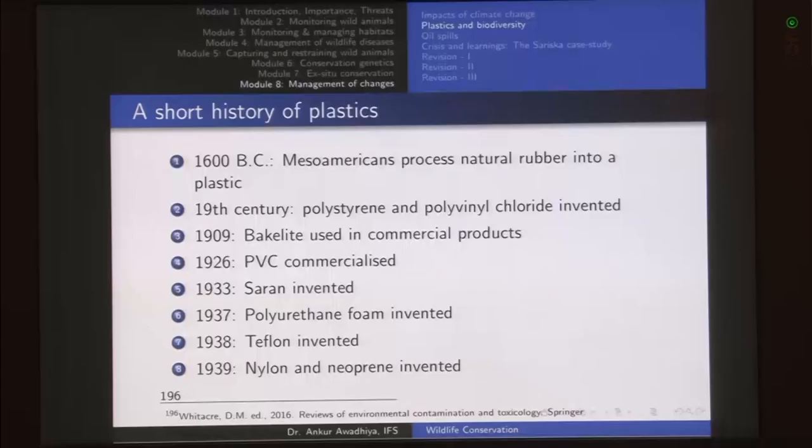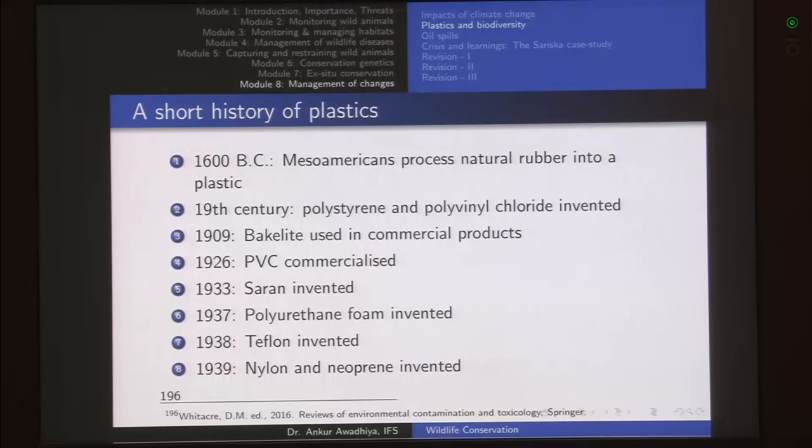The history of plastics goes back to as far as 1600 BC, so plastics are not something that are new. We have had plastics around for more than 3500 years. In 1600 BC, Mesoamericans processed natural rubber into a plastic, and this rubber was processed into a ball that they used to play with.